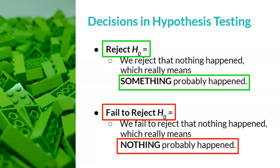Using our stoplight analogy, here red means stop. I use the color red because nothing probably happened in the research study. Another way to look at this decision: remember that for the first decision, we defined reject the null hypothesis as something probably happened. In the second decision, we're just saying that we failed to find something, so nothing happened. In other words, fail to reject the null hypothesis means that nothing probably happened, or the study probably didn't work.